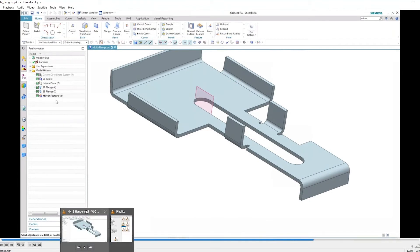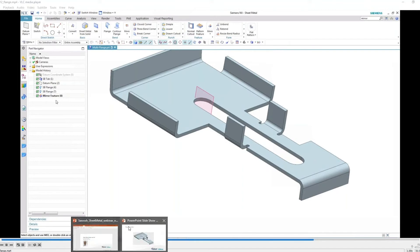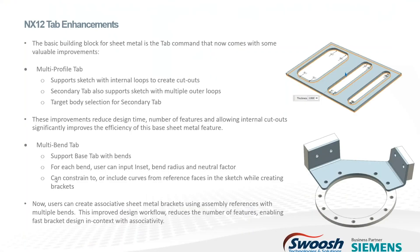Another neat enhancement I want to make sure I cover is the tab. The tab has always been kind of a basic thing — create one tab, start with that as a base, and build flanges and other stuff on top. But now with the tab, you've got multiple profiles you can work with, so you don't have to create a tab and then follow it up with a bunch of cutouts or extrudes. You can also create brackets that include what looks like flanges — these are called multi-bend tabs. If you do this in the context of an assembly, you can actually create interfaces to adjacent parts and have formable flange geometry built into a single feature representing that tab.